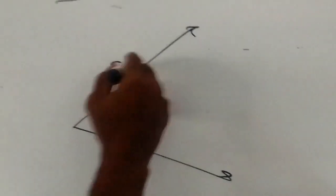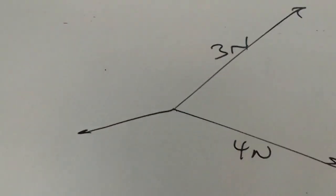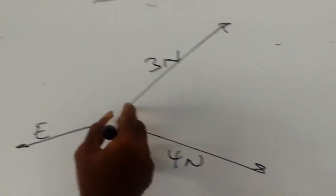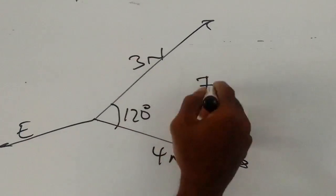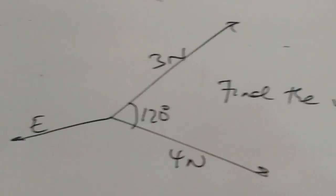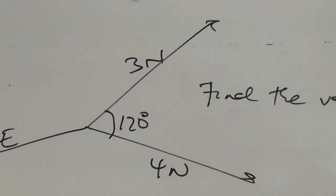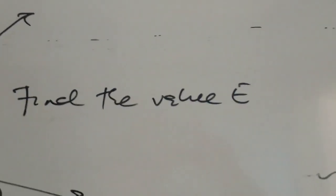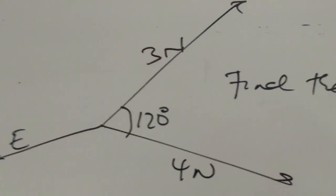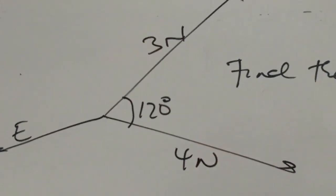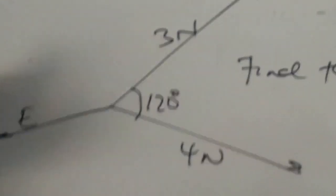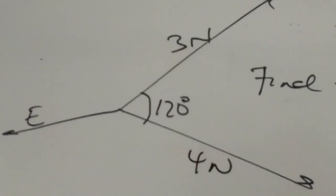Let's take a problem. We have two forces, 3N and 4N, at equilibrium with a force E. The angle between the 3N and 4N forces is 120 degrees. We have to find the value of E. We have three forces at equilibrium — a 3N force, a 4N force, and E — keeping an object at equilibrium. The angle between the 3N force and 4N force is 120 degrees. The force E is the equilibrant of 3N and 4N. So how do we solve this problem?